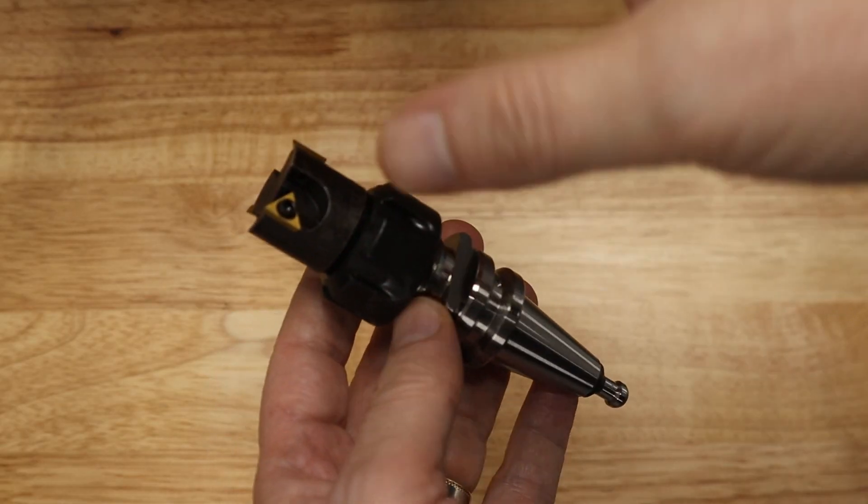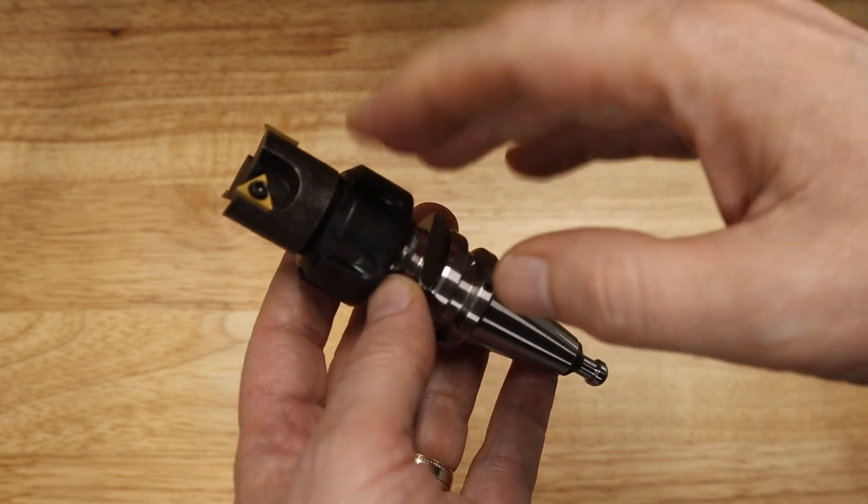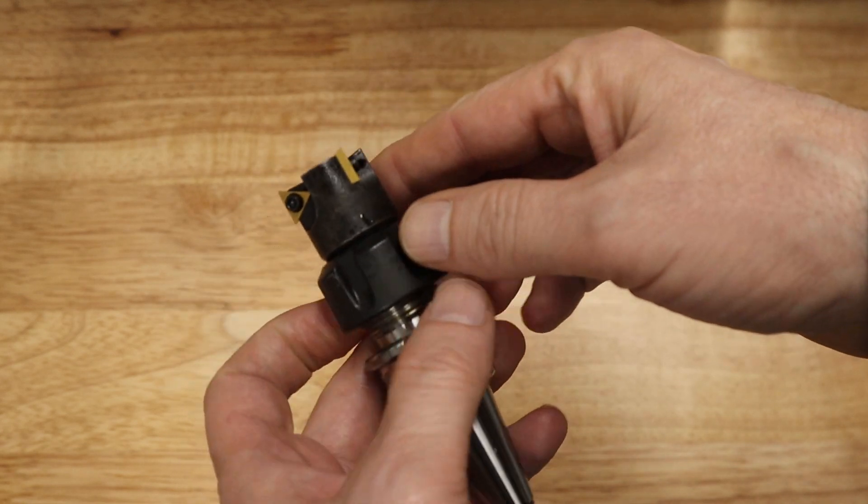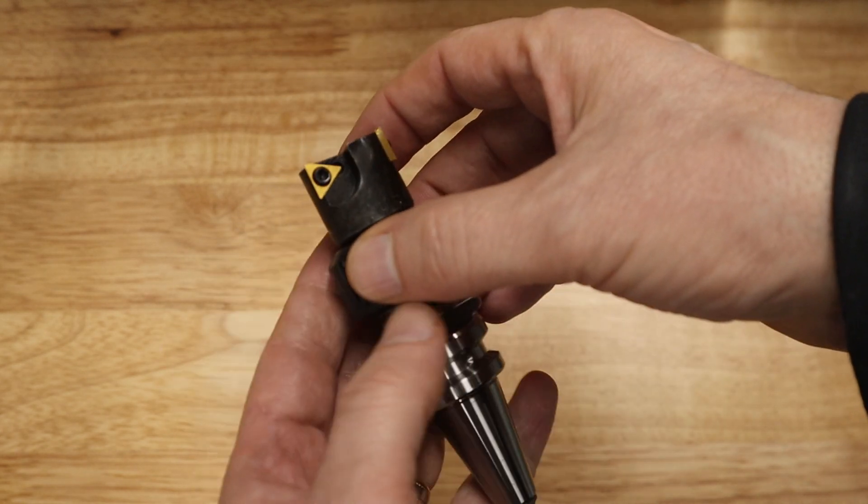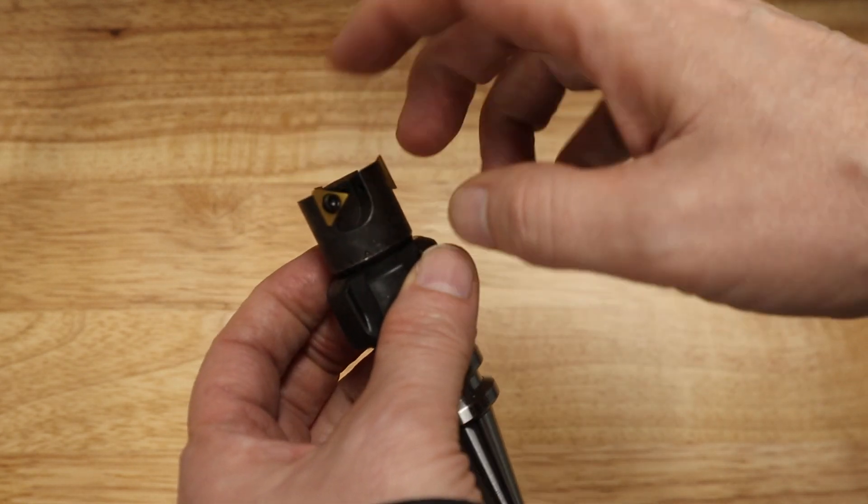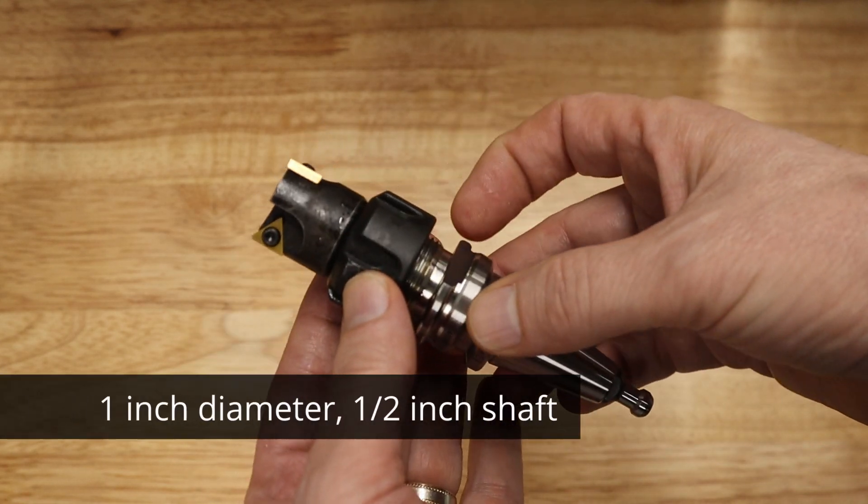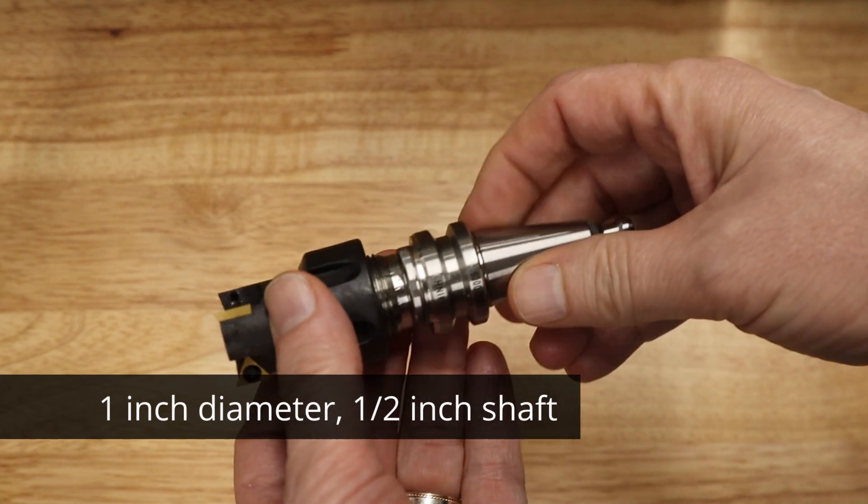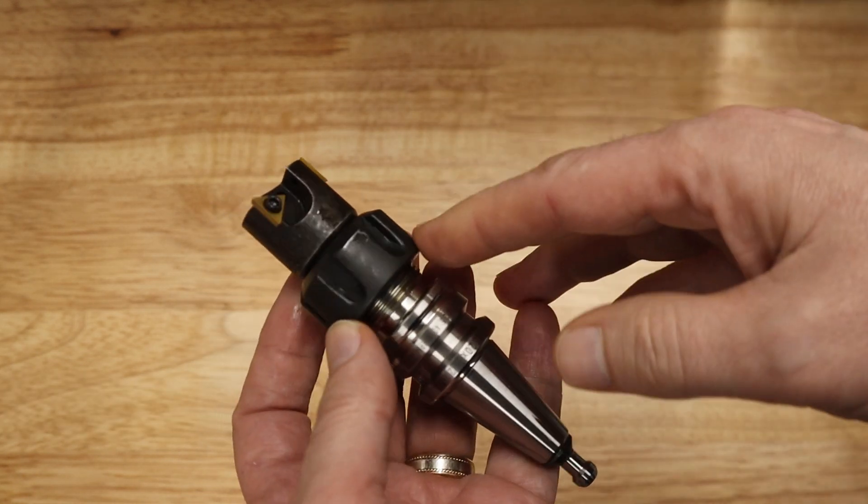You've probably seen me use a 3-inch end mill in the past to face off the top of parts. I just got this face mill. It's an indexable face mill with three of these triangular inserts. So I'm going to use this today for the first time to surface the mold part that I'm going to be making.